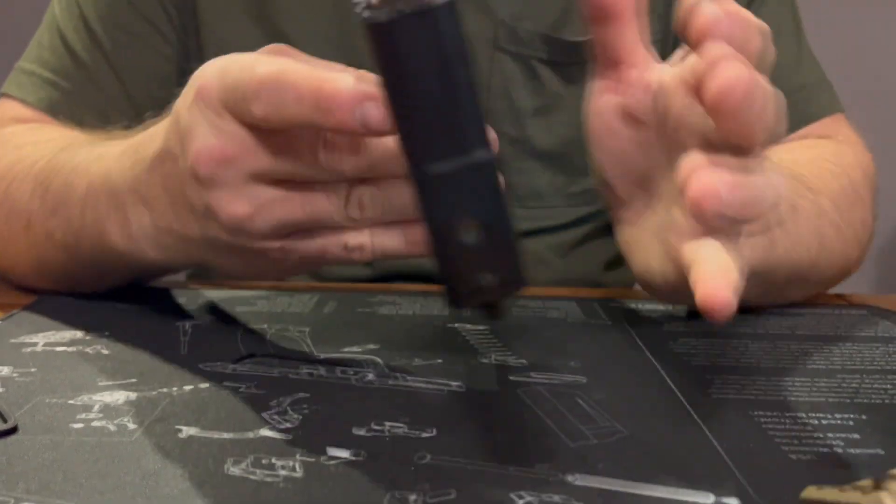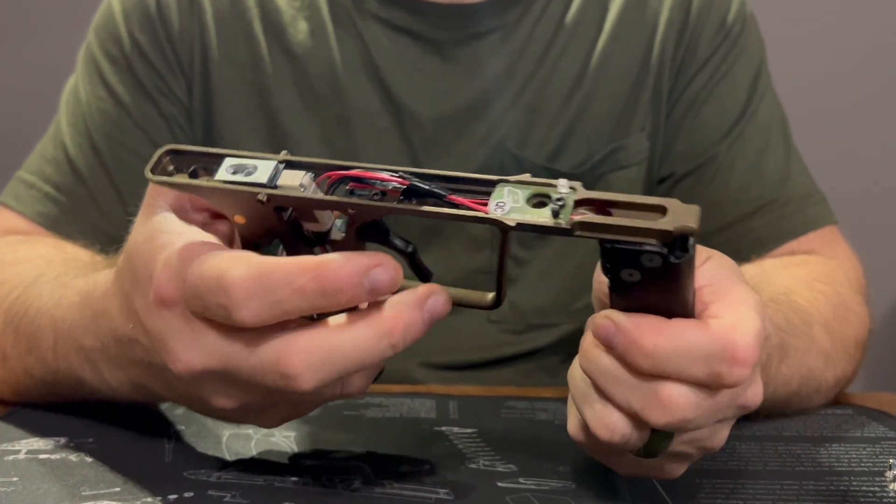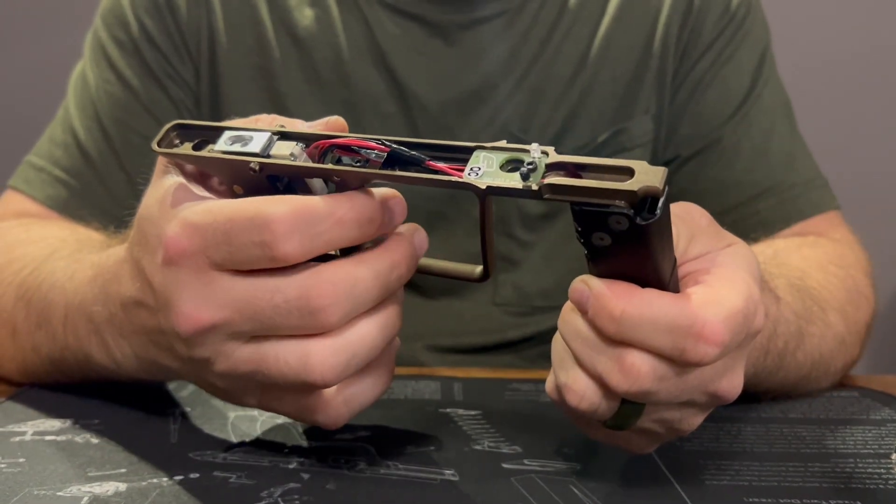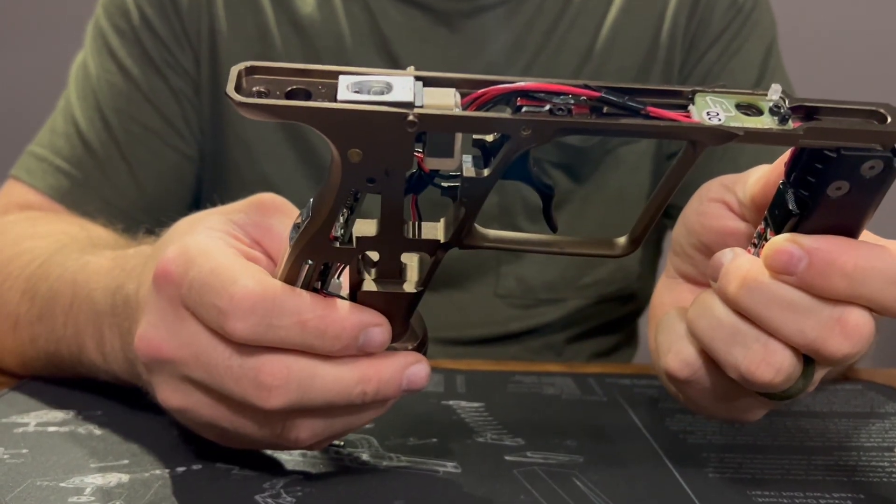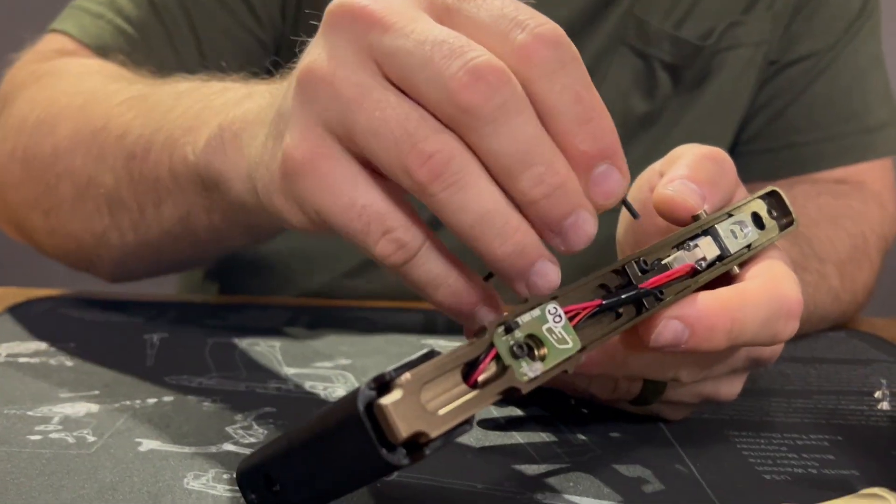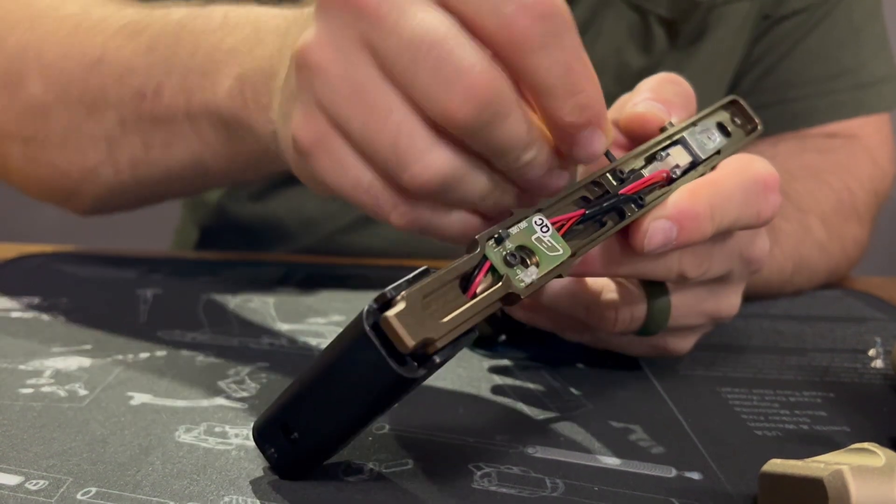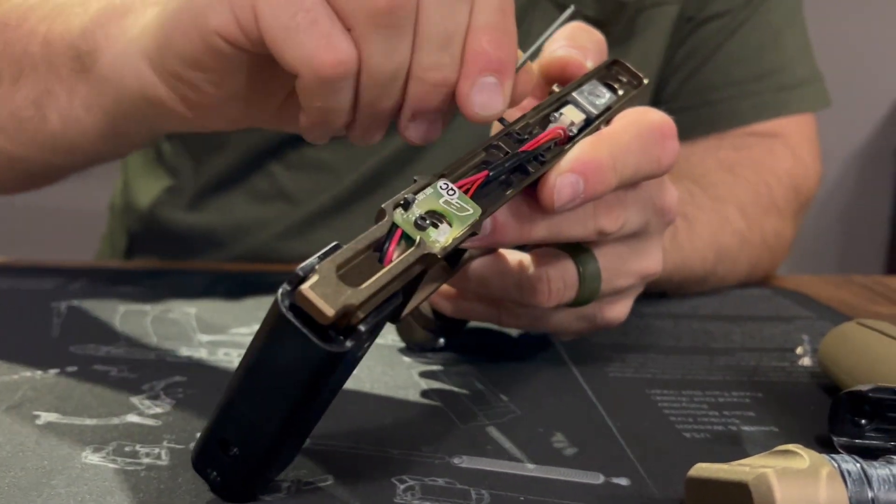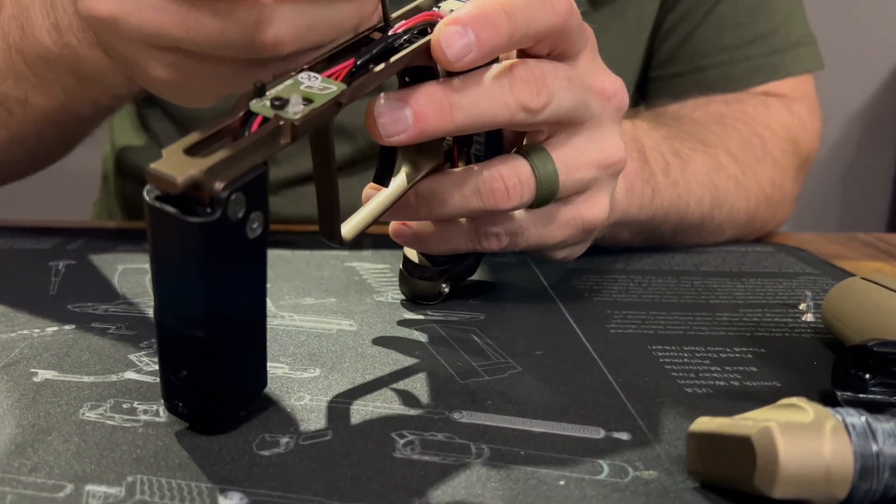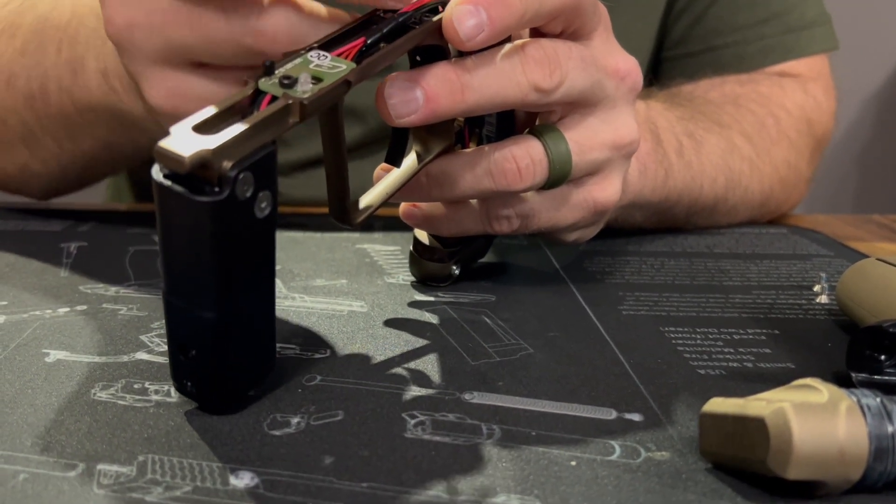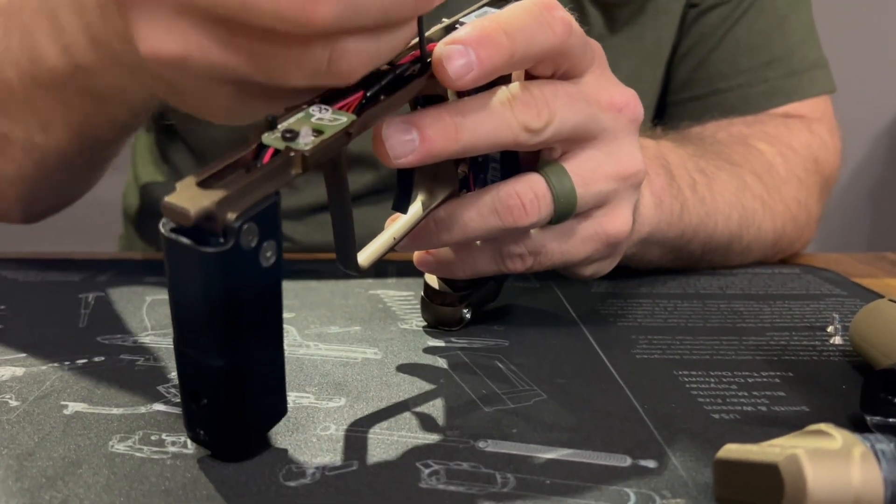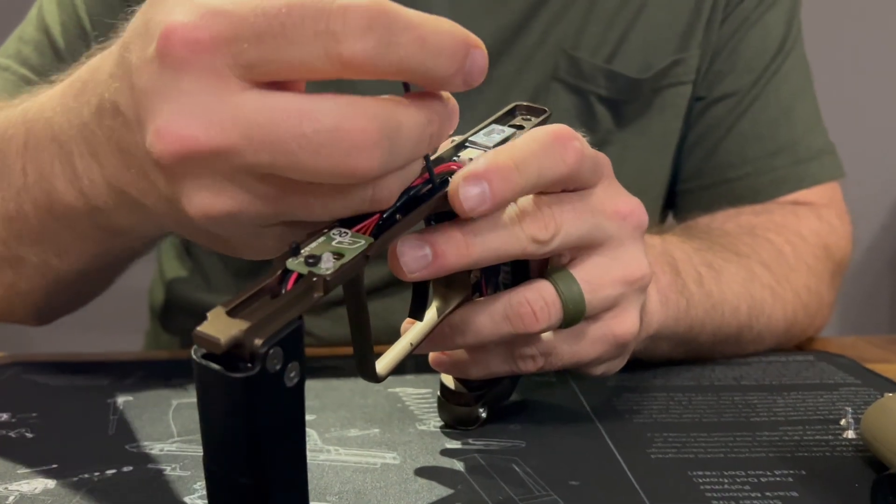Then you can just kind of try it out. Make sure it functions the way you want it to. Make sure everything feels good. As long as everything feels good and you're happy with the way everything is, then you can go ahead and tighten everything down. Starting with your trigger pin. This stuff doesn't have to be super tight. You want to be careful you don't strip out your housings. It's just an aluminum housing. If you over tighten it, you'll strip it out.